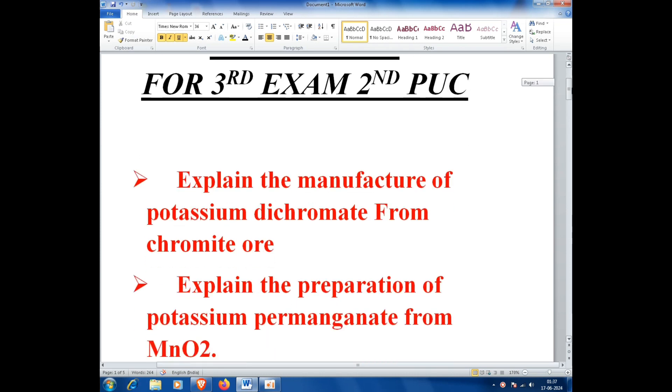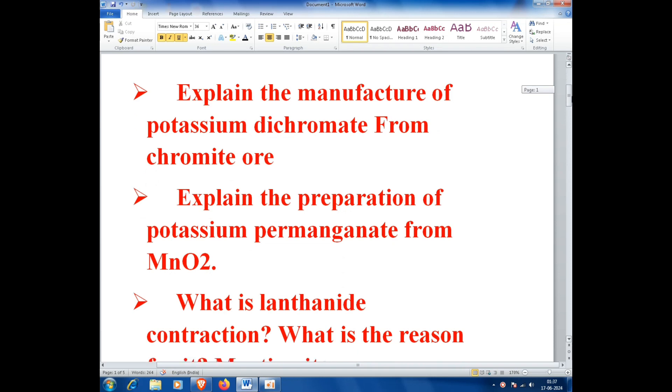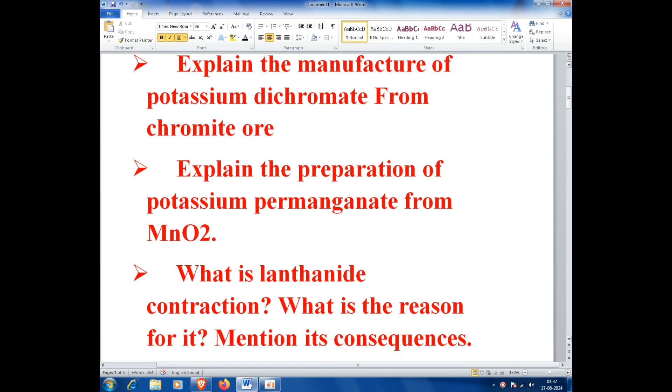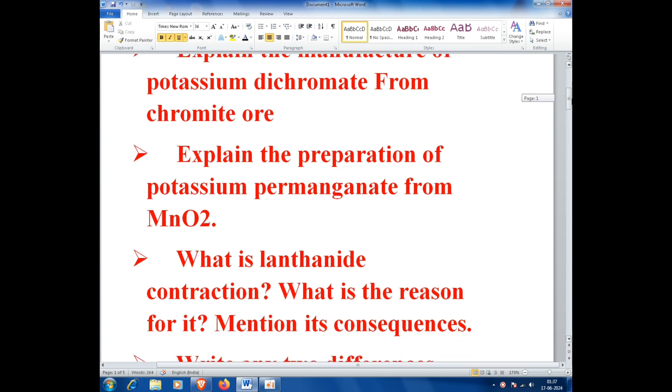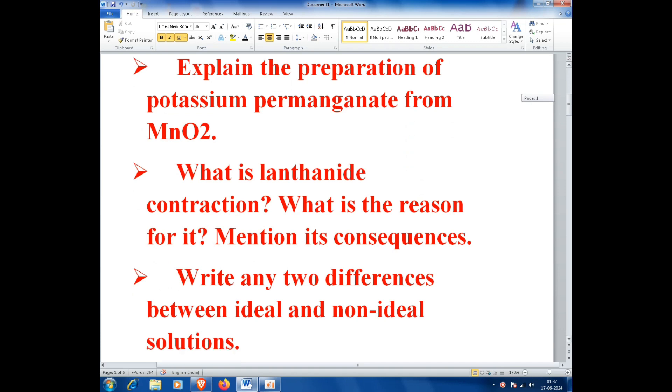Explain the manufacture of potassium dichromate from chromite ore. Explain the preparation of potassium permanganate from MnO2. What is lanthanide contraction? What is the reason for it? Mention its consequences.